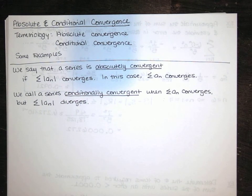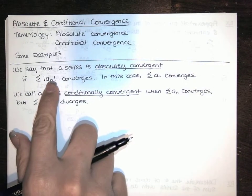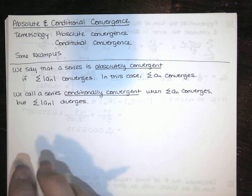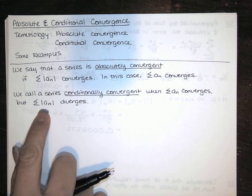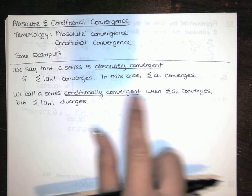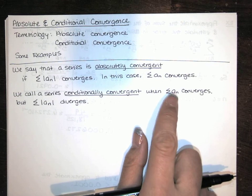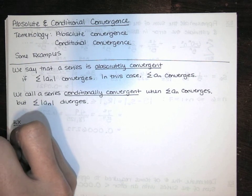This actually allows us to determine whether an alternating series converges pretty easily. If its terms are those of a geometric series or similar to those of a p-series, and the corresponding series of absolute values is a p-series or a geometric series, then you're immediately able to say this series converges and therefore the original series converges. Now if the series of absolute values diverges, that does not tell you anything about the original series. In that case, you would have to go back to the alternating series test to determine what's happening with the original series.